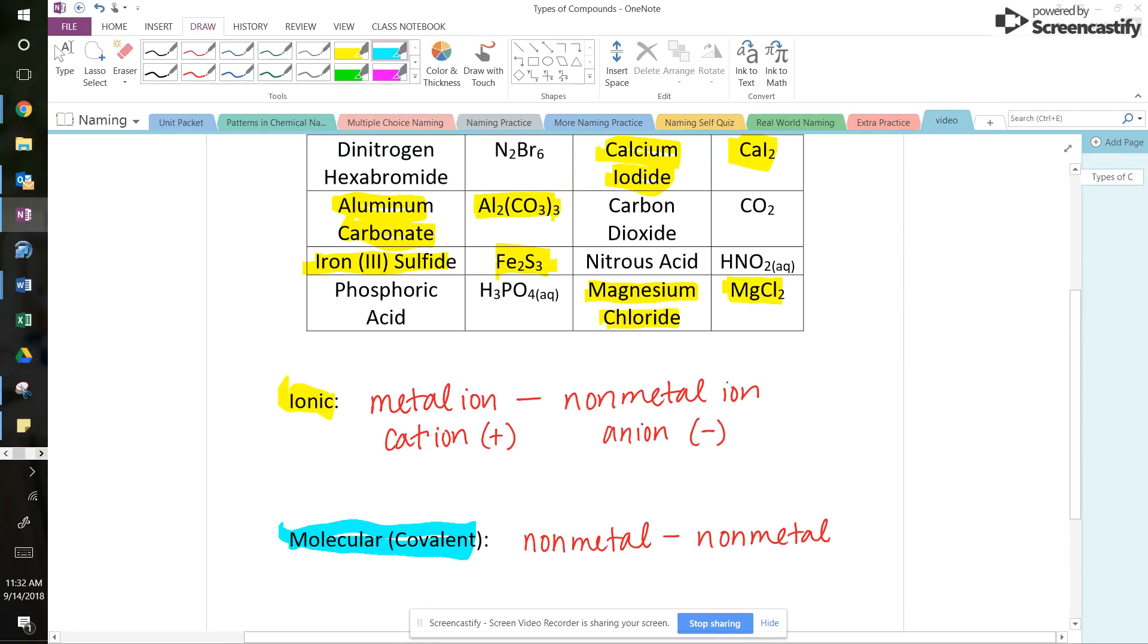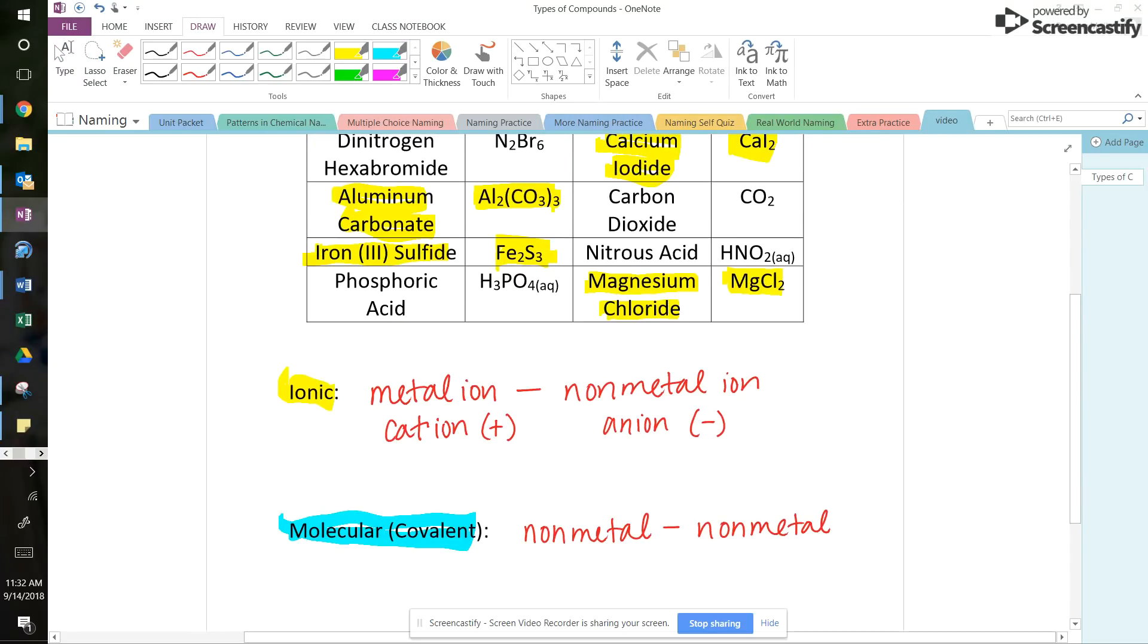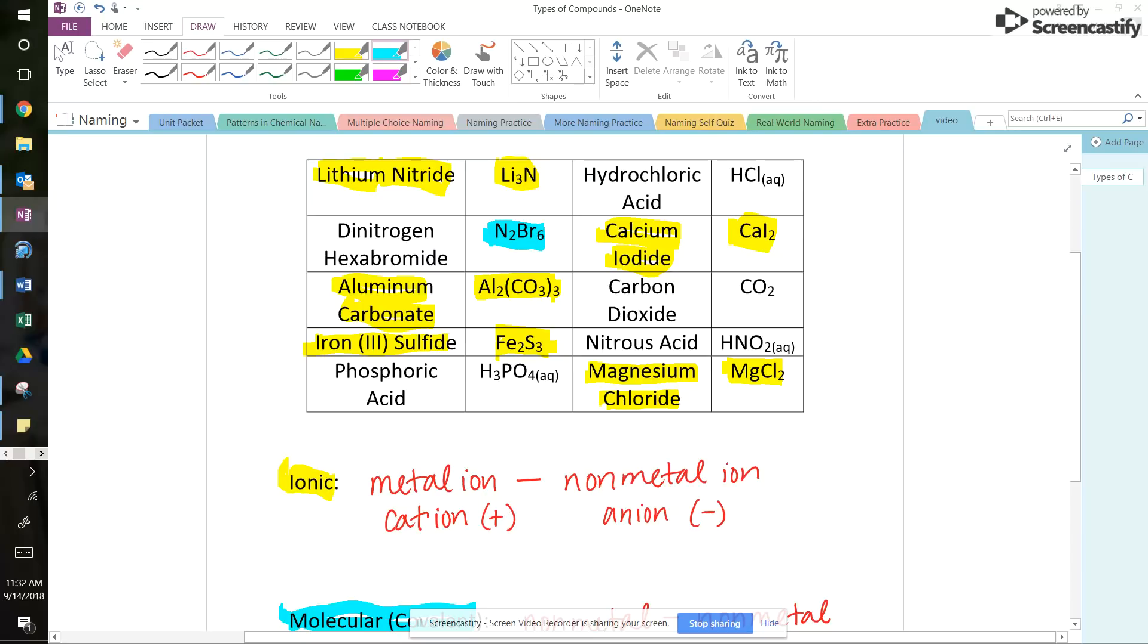So if I'm looking for two non-metals, nitrogen's a non-metal, bromine's a non-metal. That looks good. Wait, when I look at the name though, what the heck's that di in front of the nitrogen? Well, you know, you'll learn that in a future video, but it is telling you the number of atoms. So nitrogen and bromine. So again, whether or not I have the formula or the name.